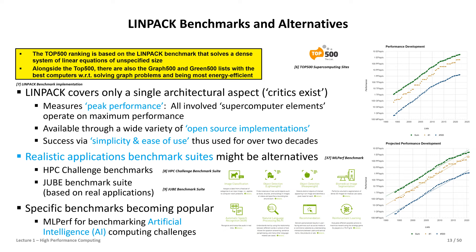We also have a benchmark suite in Jülich which is much more based on real applications. It's not only about solving a dense system of linear equations, which is basically the idea of the Linpack benchmark. Applications today can span very unstructured problems — like graph problems — so there's another list called the Graph 500, because different systems need different capabilities to be good at those. With the energy crisis, the Green 500 list is also now important on the Top 500 website — it outlines that some systems are more energy efficient than others.